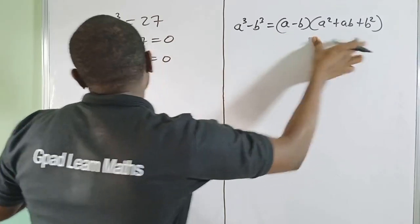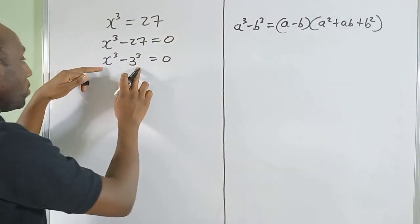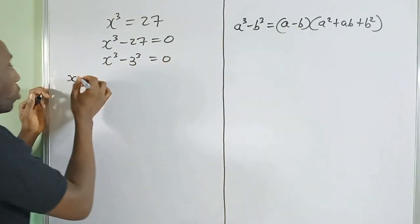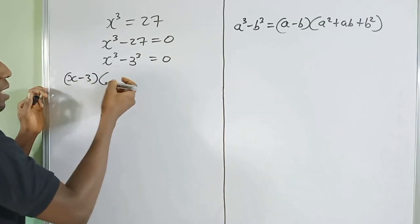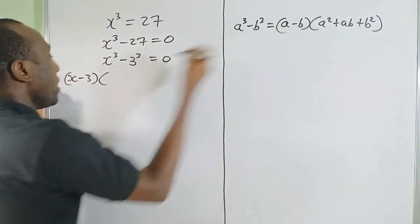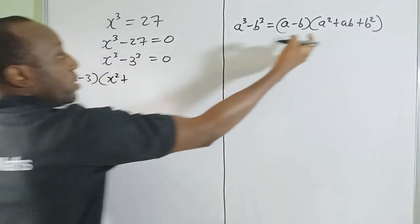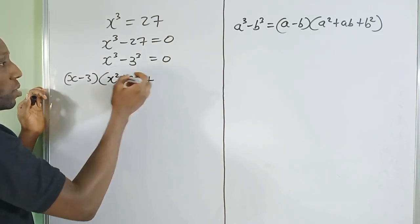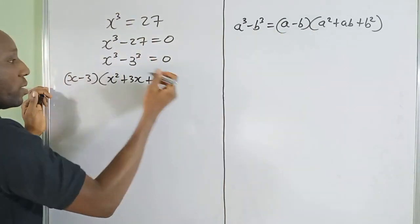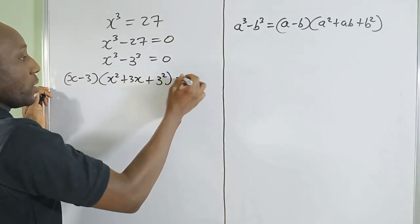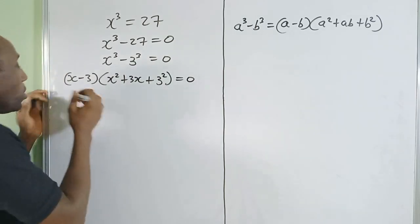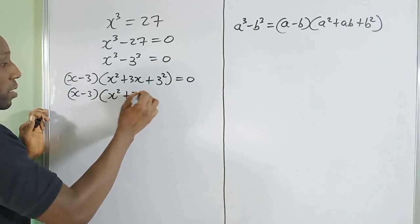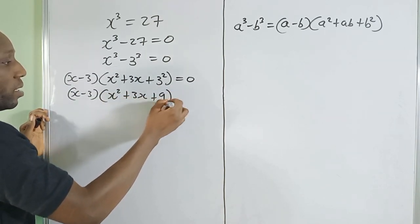We're going to apply this algebraic identity. So this would be (x − 3), and then a² is x², a·b is 3x, and b² is 3² = 9. So we get (x − 3)(x² + 3x + 9) = 0.